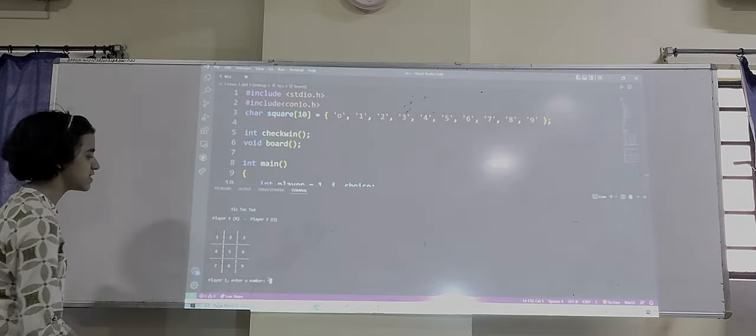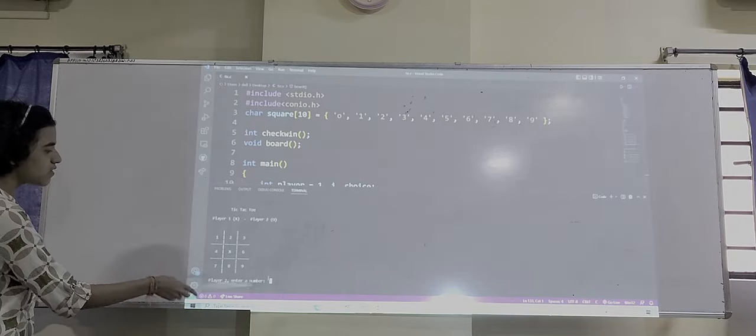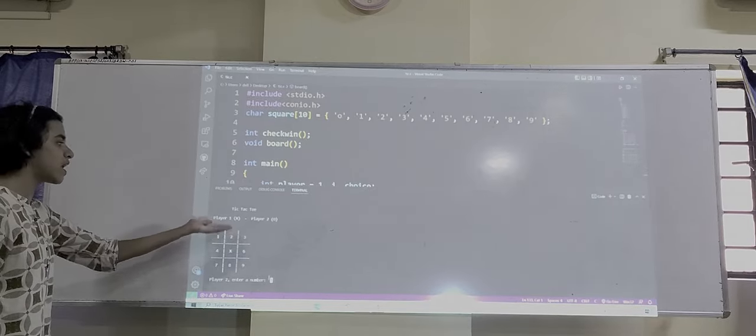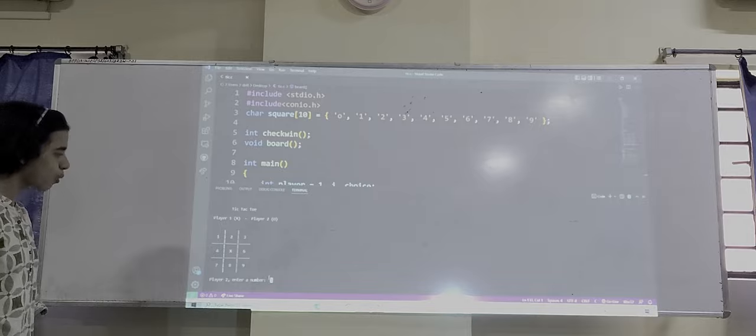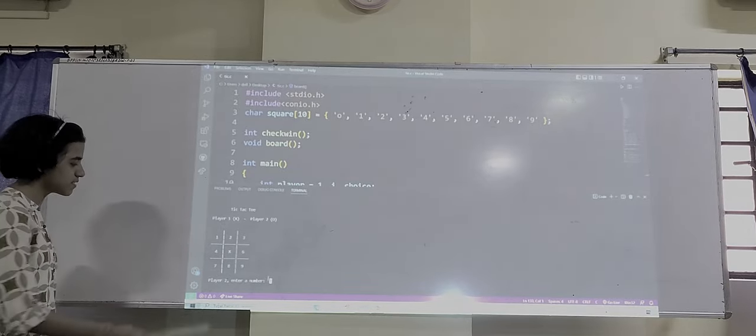Let's play the game. Player 1, enter a number. This is our Tic-Tac-Toe game. Player 1 takes the mark X and Player 2 takes the mark O. And this is our board: 1, 2, 3. And this is the board. Player 1, enter a number.